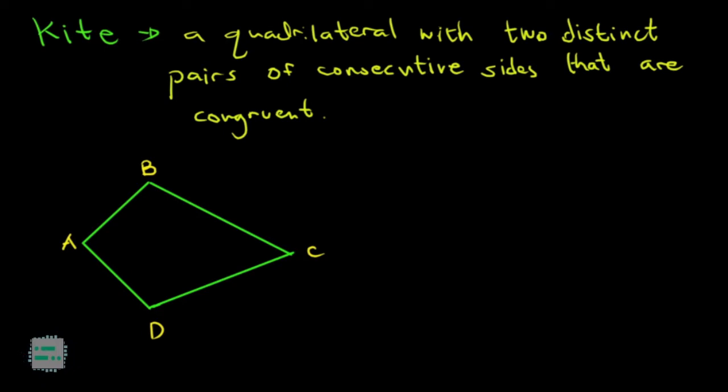In this video we're going to talk about a very unique type of quadrilateral called a kite. By definition, a kite is a quadrilateral with two distinct pairs of consecutive sides that are congruent. Hindi kagaya ng parallelogram na opposite sides ang magkasukat.